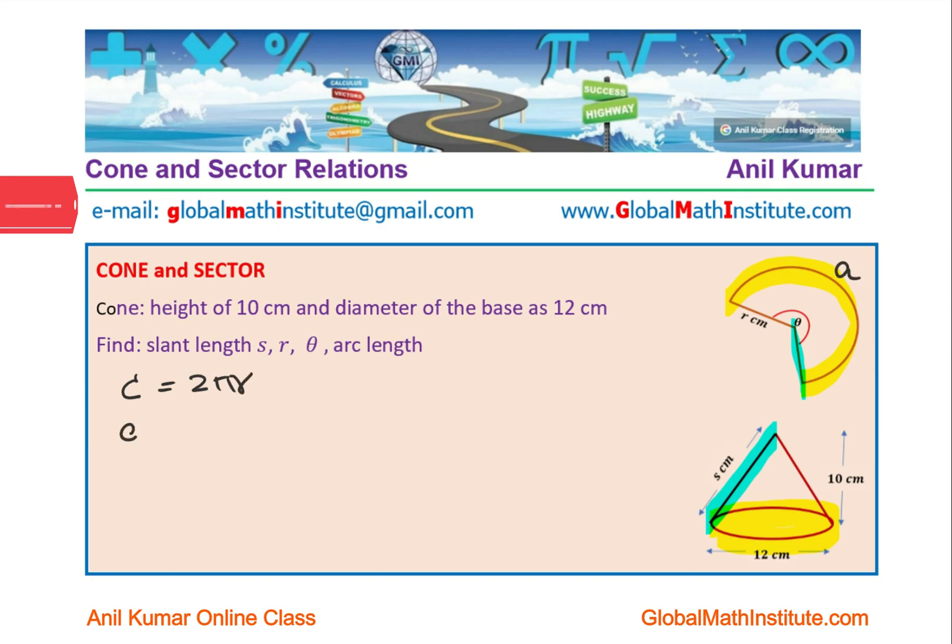You know the circumference C is 2 pi r, arc length A is r theta where theta is in radians, and slant height you can find easily using Pythagorean theorem. These relations help us to relate the sector to cone. All questions based on cone and sector relations can be solved following this particular method. I hope it makes sense. Feel free to write your comments and share your views. Thanks for your time and all the best.